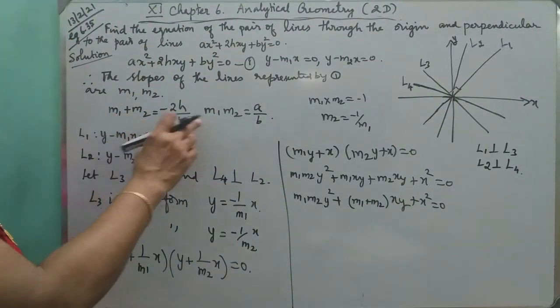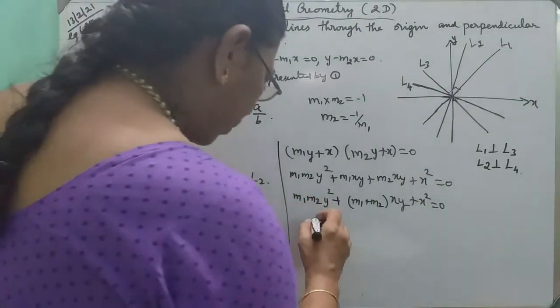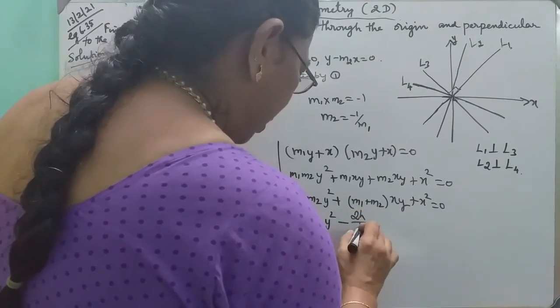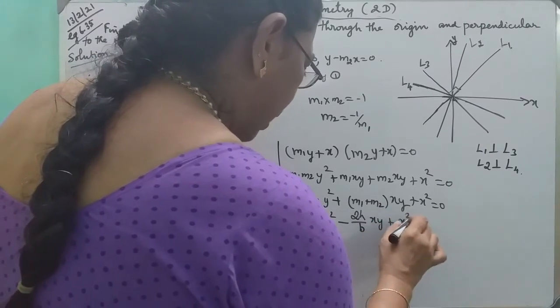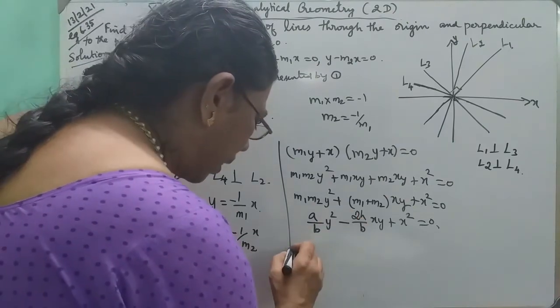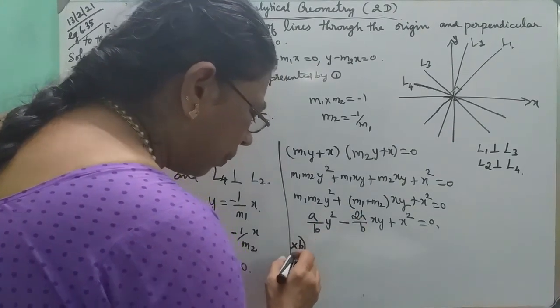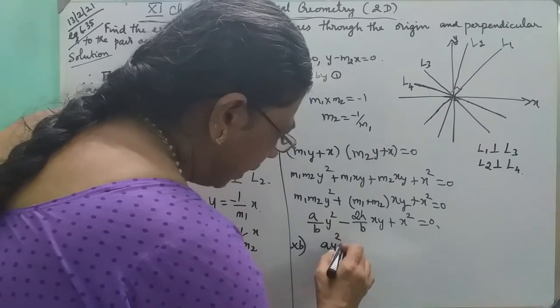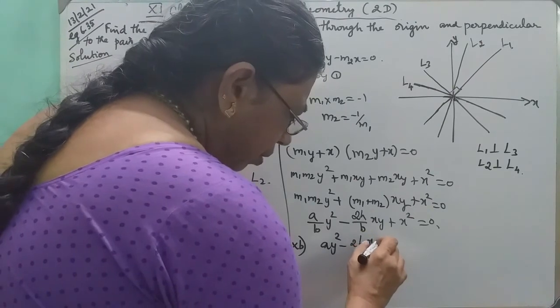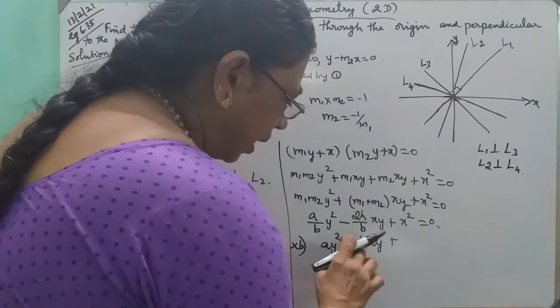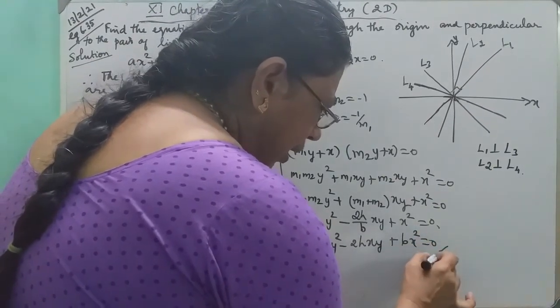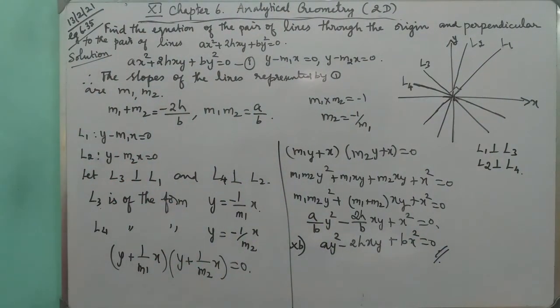M1 plus M2 substituting: this one is A by B Y square, this one is minus 2H by B into XY plus X square equal to 0. Eliminate by multiplying the full equation by B: AY square minus 2HXY plus BX square equal to 0. This is the required equation.